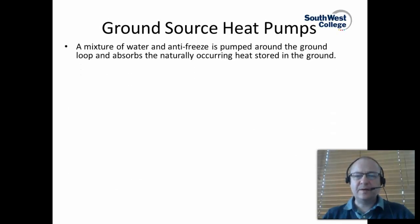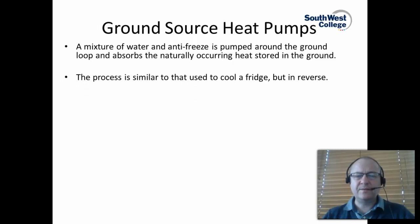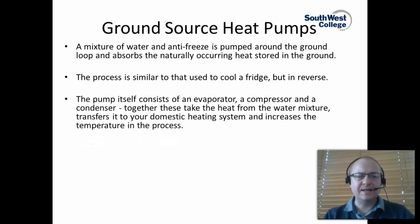Water and antifreeze pump around the ground loop and absorbs the naturally occurring heat from the ground. The whole process is similar to that used to cool a fridge in a typical domestic setting, but it works in reverse — it takes the cold from the outside and amplifies the heat into domestic hot water and space heating. The heat pump itself consists of an evaporator, a compressor, and a condenser to take the heat from the water mixture and transfer it to your domestic heating system.